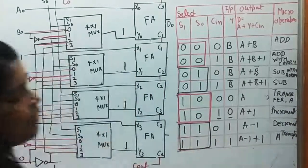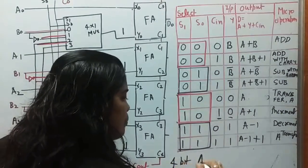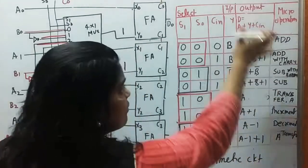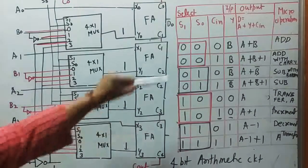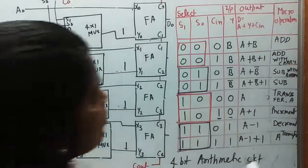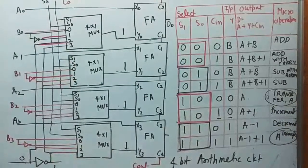In the 4-bit arithmetic circuit, the truth table has 8 entries, but only 7 distinct operations are performed because Transfer of A appears twice. This is the overall concept for the arithmetic circuit. Thank you.